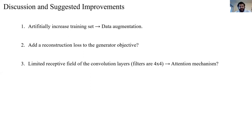And also, we can modify the objective function by adding reconstruction loss to the objective of the generator. And also, we can try to mitigate the limited receptive field of the convolutional layers by incorporating attention mechanism. Will that help? I'm not sure. Thank you very much.